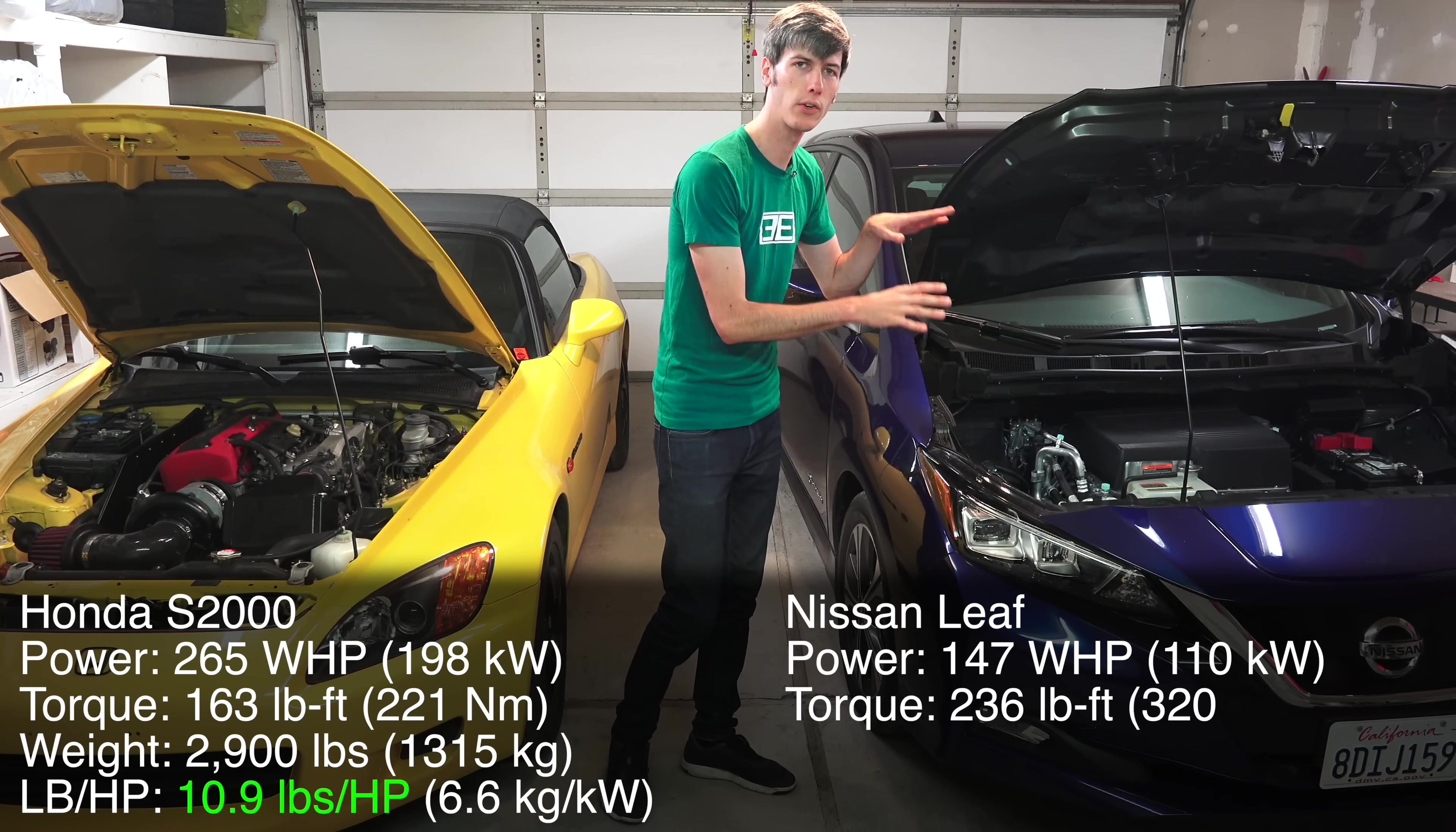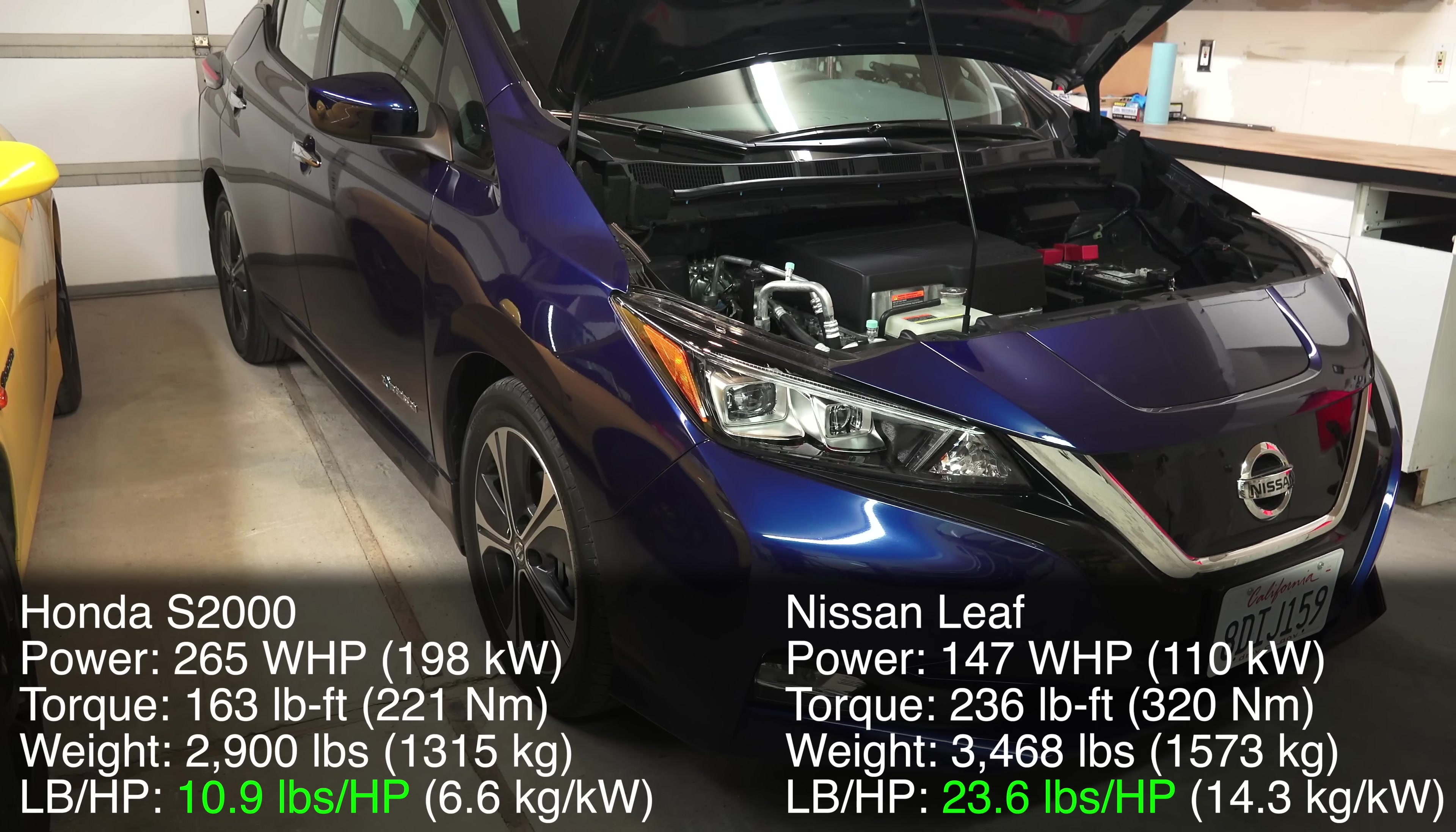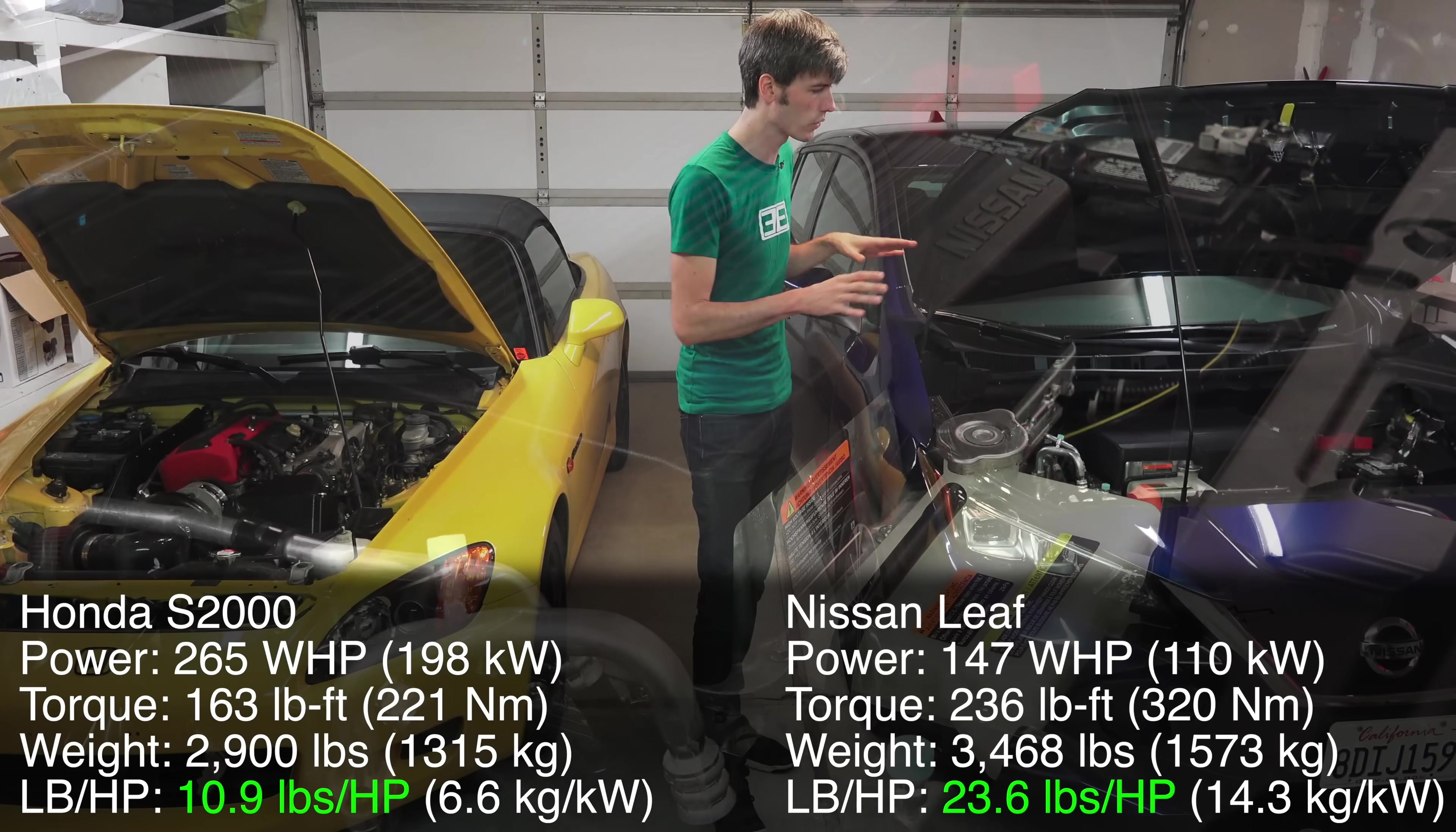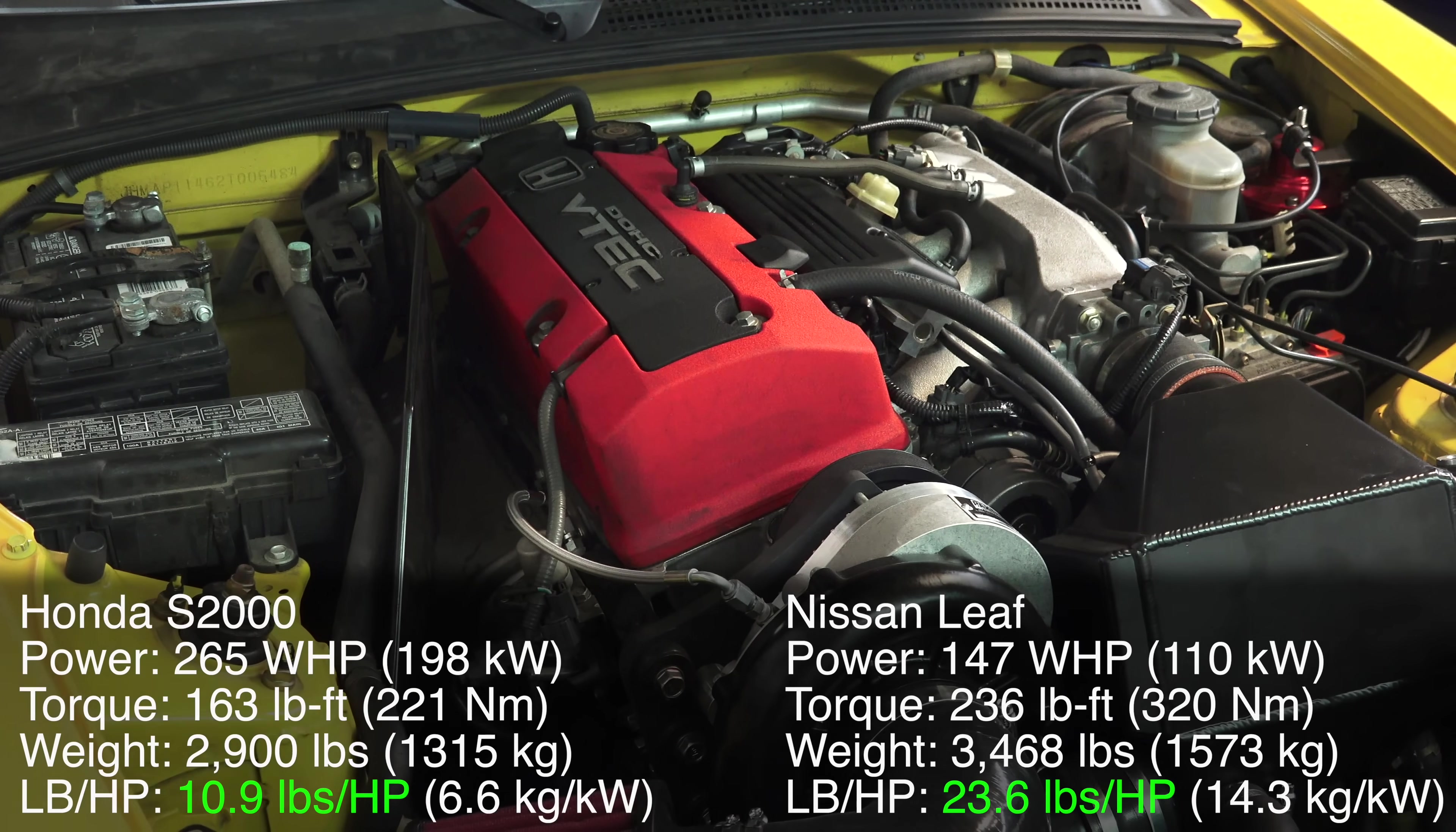Now the Nissan Leaf produces 147 horsepower and 236 pound-feet of torque, so it's got significantly less power but significantly more torque. But this vehicle weighs about 3500 pounds, meaning about 24 pounds for every horsepower. And remember, this is power at the motor's output rather than at the wheels, so the S2000's advantage as far as power-to-weight is concerned is even greater than shown by these ratios.